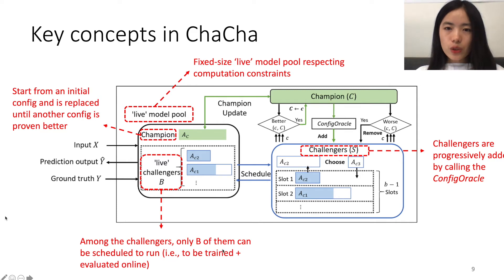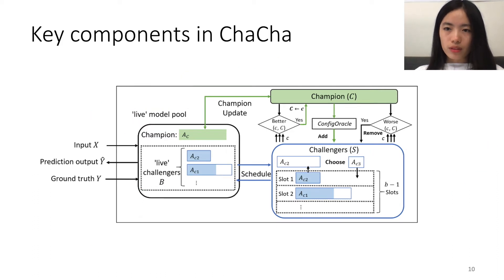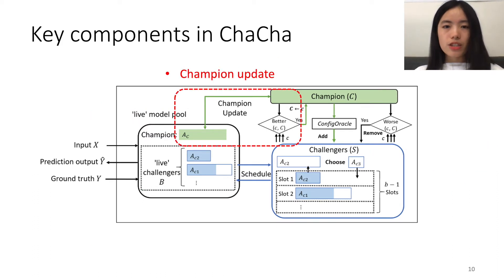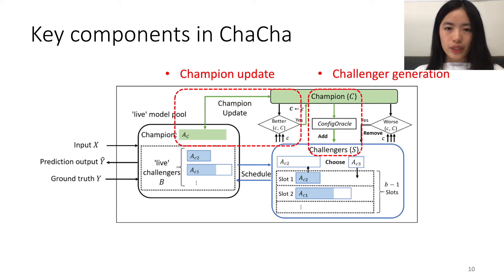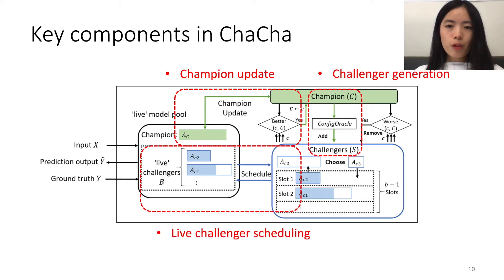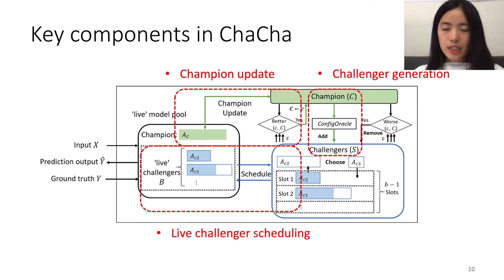Now let's take a look at the three major components of the ChaCha framework, including how we promote a Champion, how we generate Challengers, and how we do the scheduling. If you are familiar with offline AutoML algorithms, you can consider Challenger generation as an online construction of the search space, and the live Challengers together with the Champion are the configurations selected to evaluate.